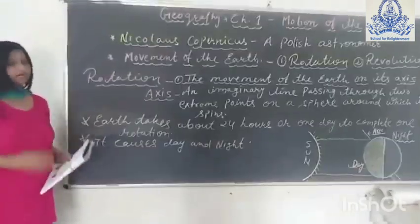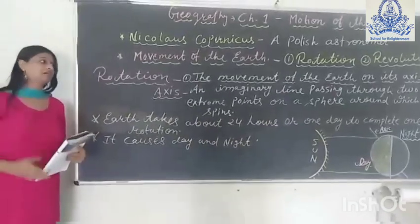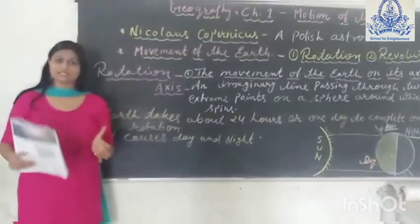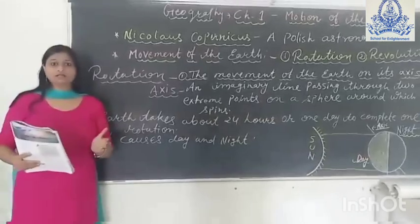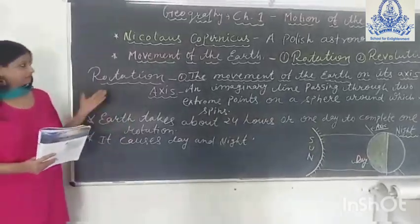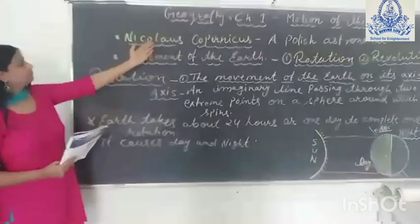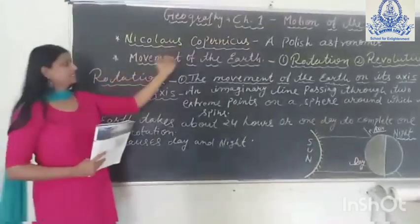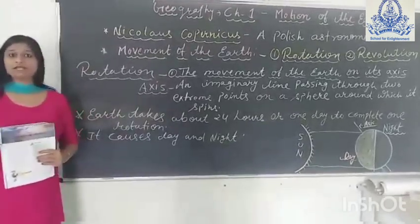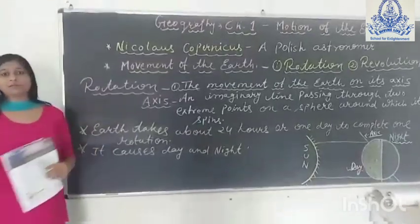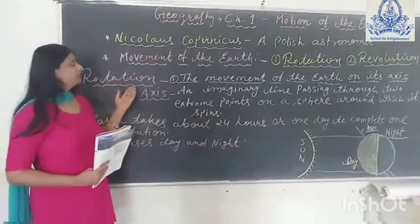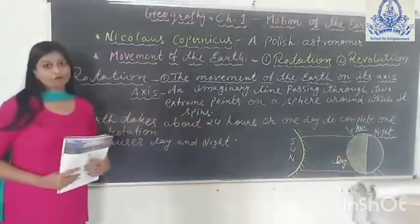Students, in ancient times people believed the earth was stationary — meaning the earth was fixed and not moving. But a Polish astronomer, Nicholas Copernicus, proved that the earth was not fixed but was moving, and that other heavenly bodies moved around it. He proved that the earth has two types of movement.